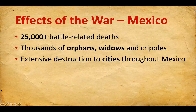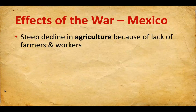Because of the war, there were now thousands of orphans, widows, and cripples in Mexico — people who had lost their fathers and husbands, and soldiers who had been severely injured and could no longer work or participate in economic activity. There was also extensive destruction to cities throughout Mexico. When battles took place in a city, buildings would be destroyed, infrastructure would be destroyed, and that became a long-lasting effect. There was also a steep decline in agriculture due to the lack of farmers and workers — so many deaths had occurred that it severely hurt Mexico's ability to grow crops and raise livestock to feed its people.